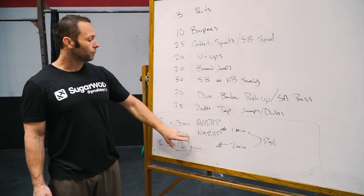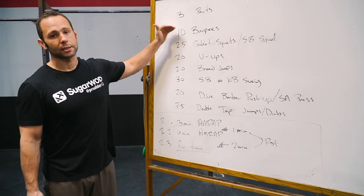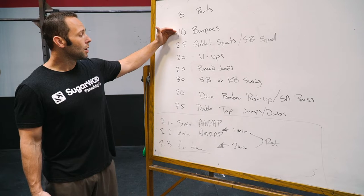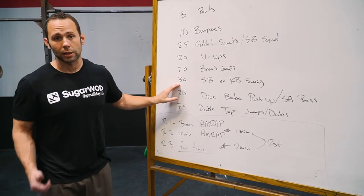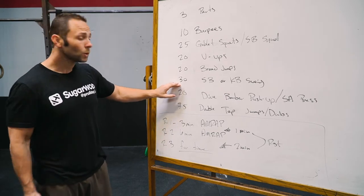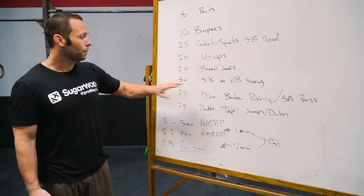For round two, for six minutes, we're going to begin at the top again. So we take it back to the top and we're going to go through, and let's say we get through the swings, whether we're using a sandbag, or a kettlebell or a dumbbell. That's your score.